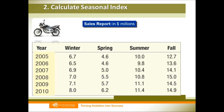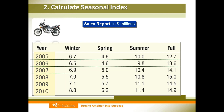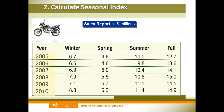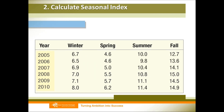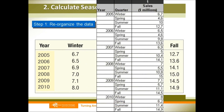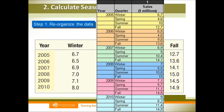But how can we get this seasonal index? There are many steps we need to remember. We first have this data — these are the motorcycle sales in millions of dollars from 2005 to 2010. The first step is to reorganize the data vertically, organizing the table with different colors to show different years.